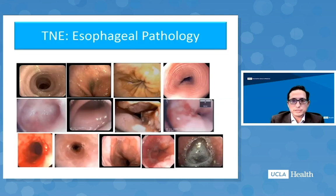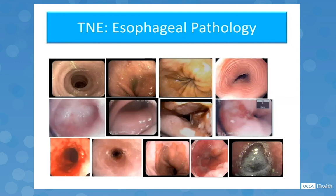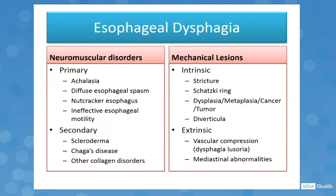In terms of findings, esophageal dysphagia is typically divided into neuromuscular disorders and mechanical lesions. Neuromuscular disorders include primary disorders such as achalasia, diffuse esophageal spasm, nutcracker esophagus, and ineffective esophageal motility, and secondary disorders such as scleroderma, Chagas disease, and other collagen disorders. Mechanical lesions include intrinsic lesions such as strictures, Schatzky ring, dysplasia, cancer, tumor, and diverticula, or extrinsic such as vascular compression and mediastinal abnormalities. With transnasal esophagoscopy, you're focusing mostly on the mechanical lesions.